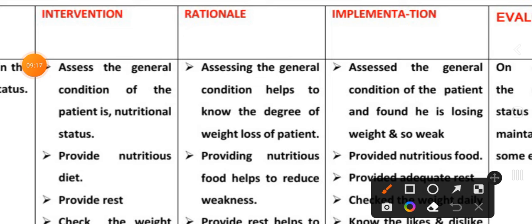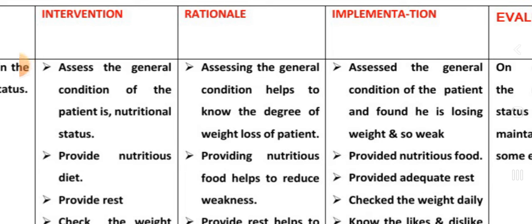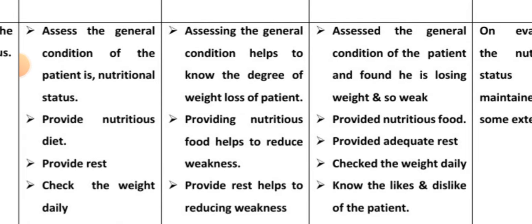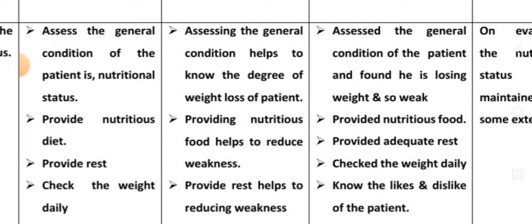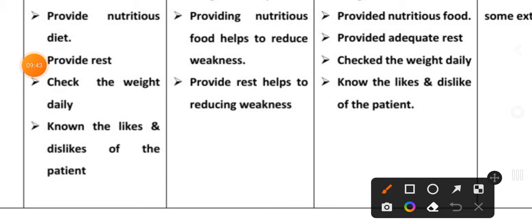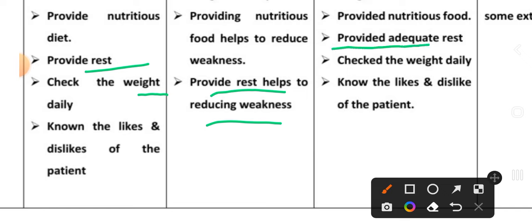Second intervention: provide nutritious diet to the patient. Rationale: providing nutritious food helps to reduce weakness. Implementation: provided nutritious food to the patient. Third intervention: provide adequate rest to the patient.